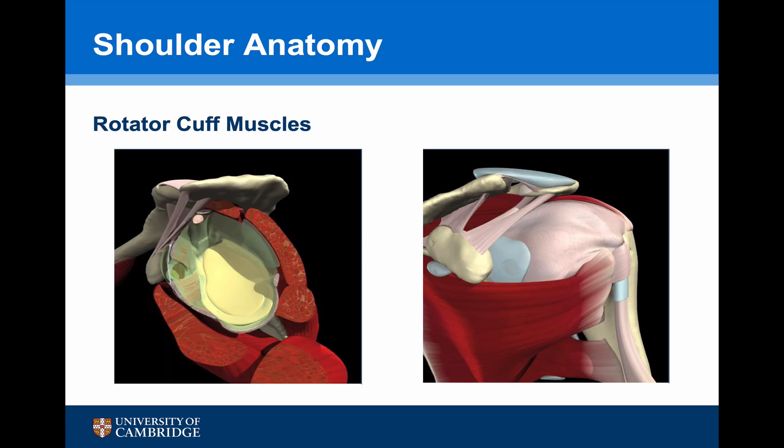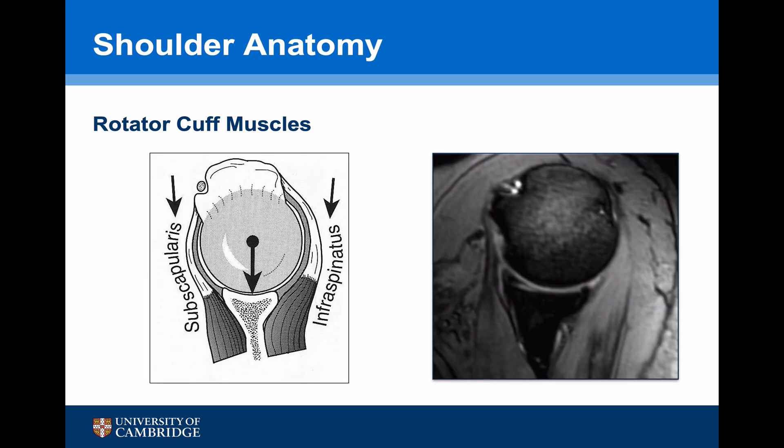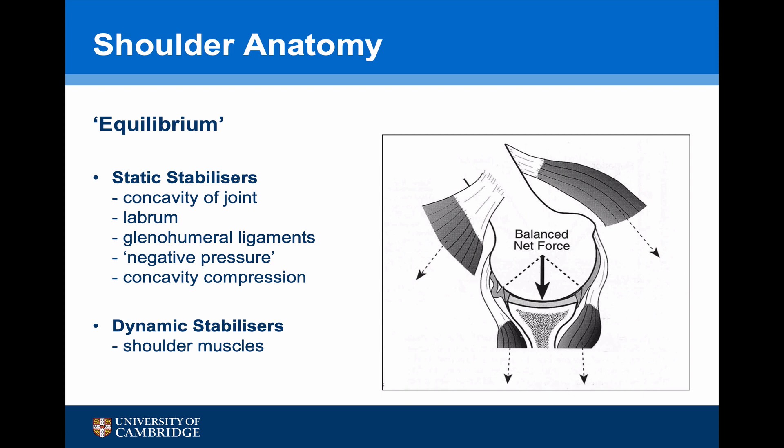Surrounding the joint capsule are the four rotator cuff muscles passing from the scapula to the humeral head. The rotator cuff tendons are constantly in tension, and by a combination of eccentric and concentric changes in tension they are able to move the joint while constantly keeping the humeral head centred. The static stabilizers — the concavity of the joint and the labrum, the glenohumeral ligaments, and the negative pressure creating concavity compression — together with the dynamic stabilizers in the form of the rotator cuff muscles work in equilibrium so that the glenohumeral joint can move into all positions while constantly centred.